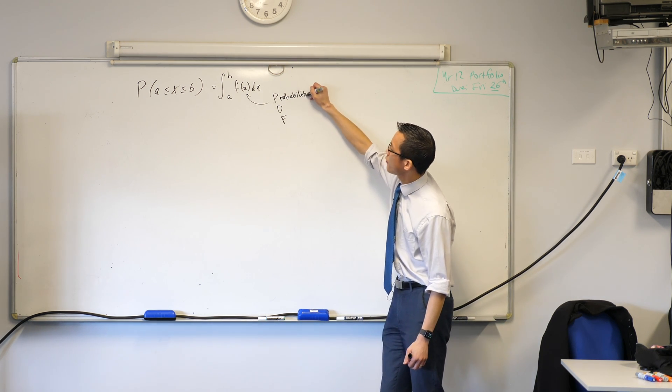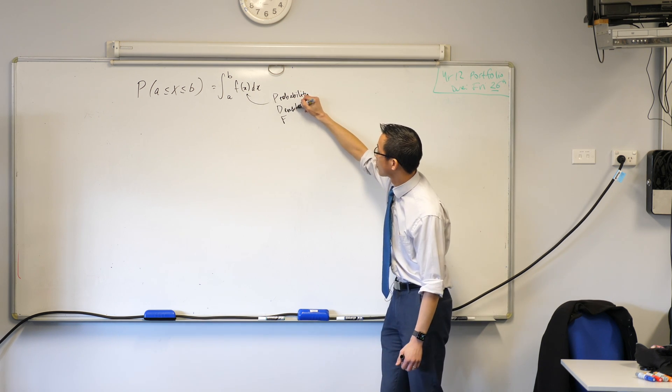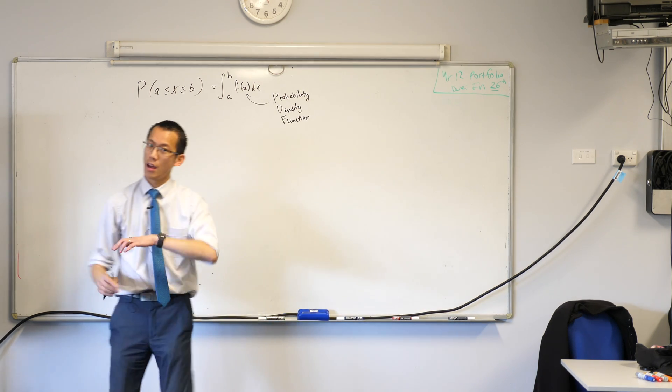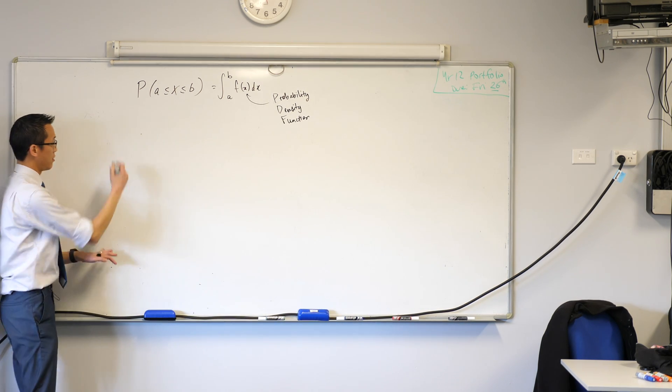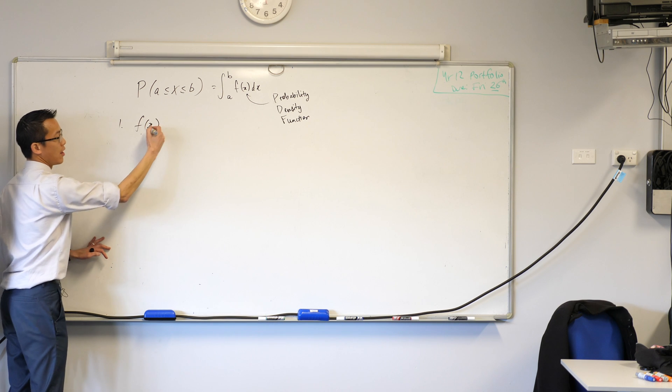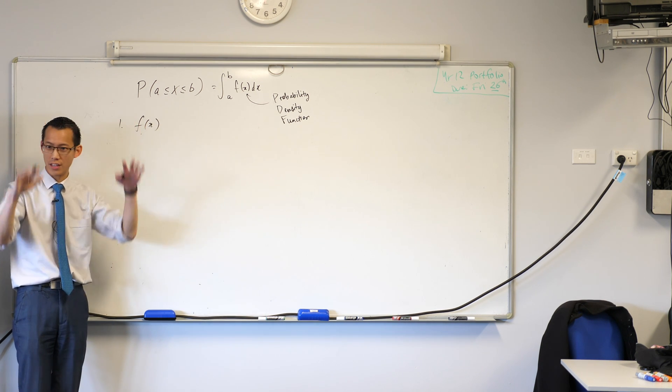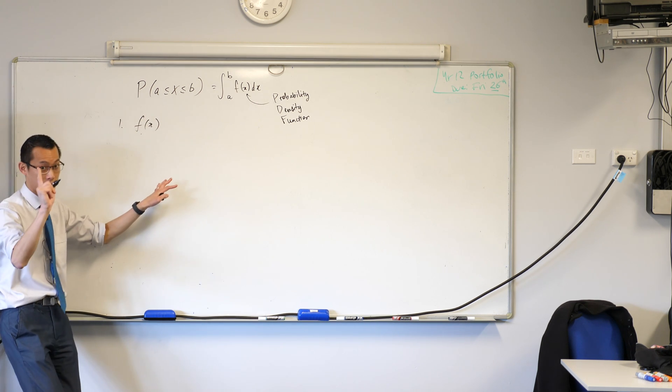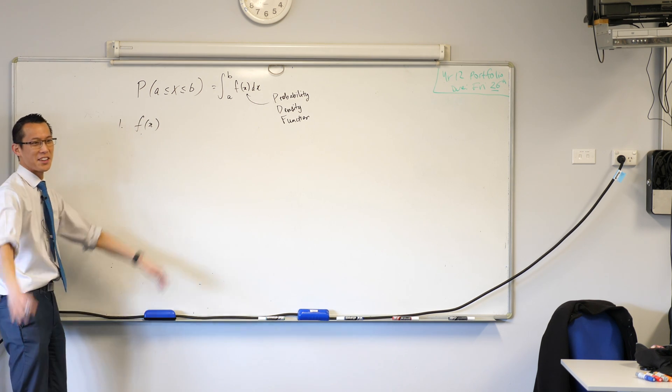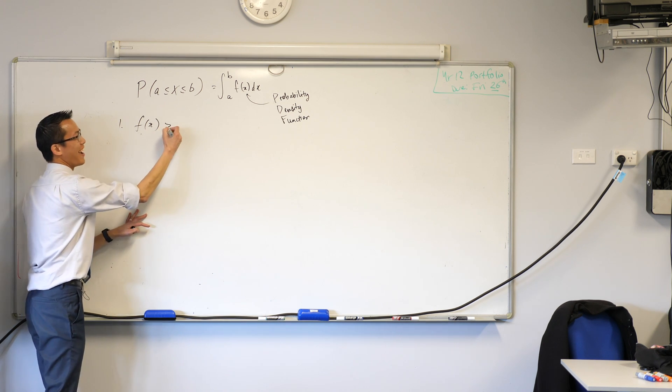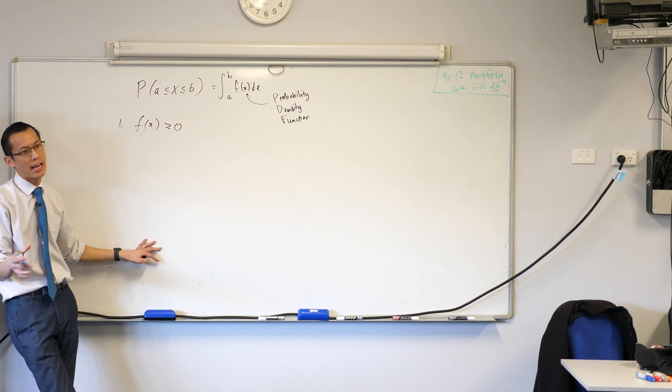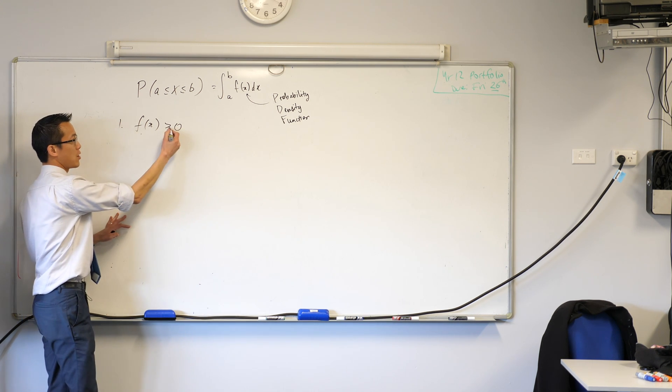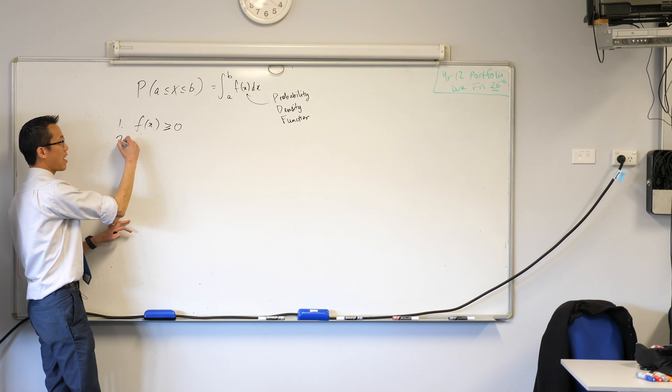Not just any function can be a probability density function and we very quickly had a look at the two conditions. We explained them but in a nutshell, number one, you have to have a function that is where? Where is this function going to exist? It's got to be positive. We don't have any such thing as negative probabilities. Something can't happen, you just say probability zero.